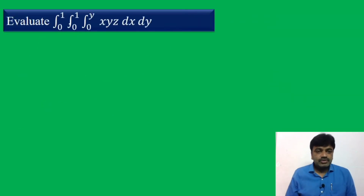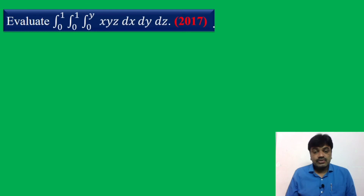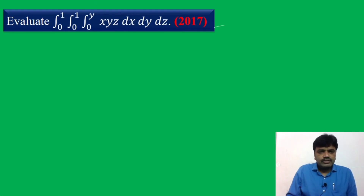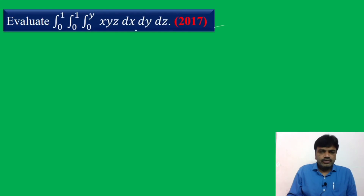Let us see another problem. Evaluate integral 0 to 1, integral 0 to 1, integral 0 to y, x y z dx dy dz. This is also a 2017 problem for 8 marks — very important. Here the innermost limits go from 0 to y, so dx comes first. The other two limits are constants, so we can follow any order for dy and dz.